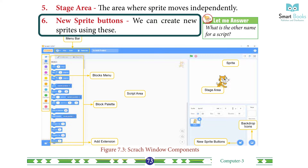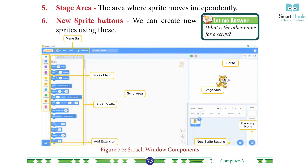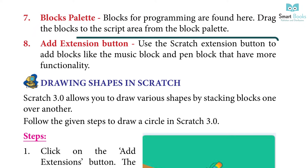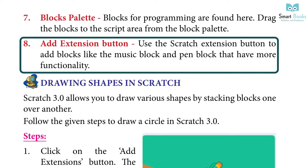Five: Stage Area — the area where the sprite moves independently. Six: New Sprite Buttons — we can create new sprites using these buttons. Seven: Blocks Palette — blocks for programming are found here; drag the blocks from the block palette to the script area. Eight: Add Extension Button — use this button to add blocks like the music block and pen block for more functionality.